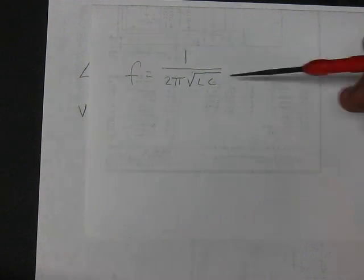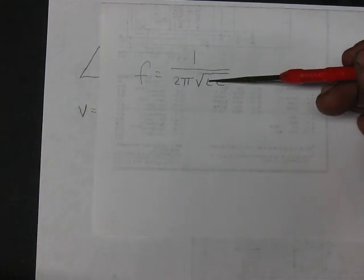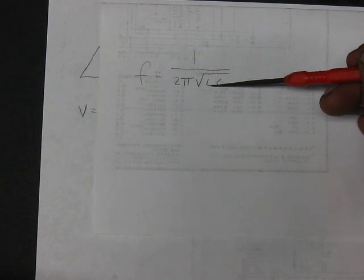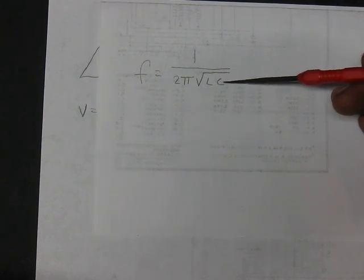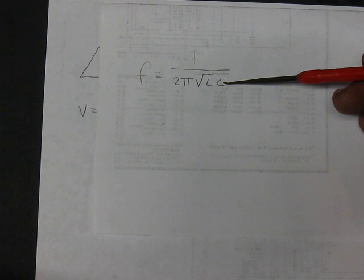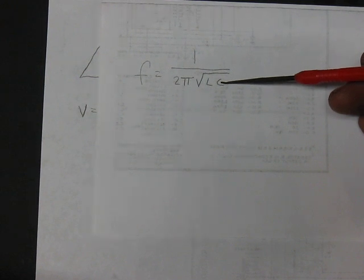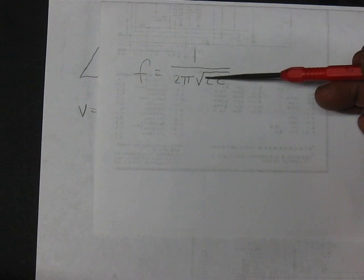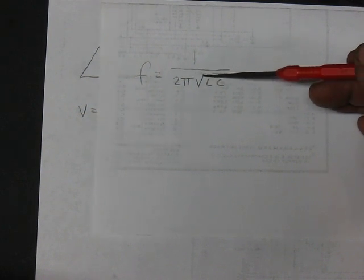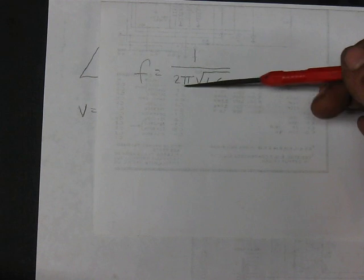Anyway, I'm getting confused here. I'm sorry. It's late night, and I'm tired. But, anyway, 1 micro Henry is .001 times 10 to the minus 6 is the way I always work things. 1 micro Farad will be the same. Multiply them together. Take the square root of them, times 2 pi, and then take the reciprocal. It will give you a frequency.